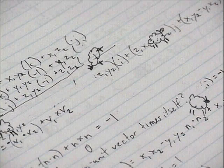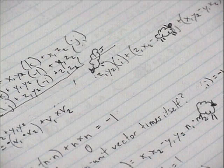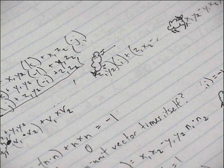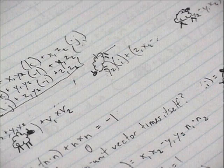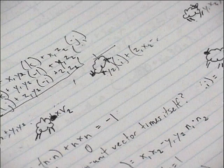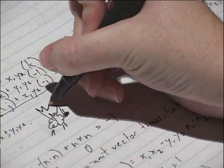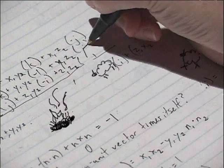For example, i times i is negative 1. The combination of different unit vectors, such as i and j, will yield the other unit vectors. So i and j yields k.